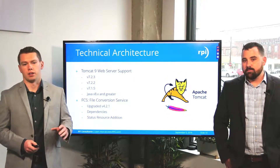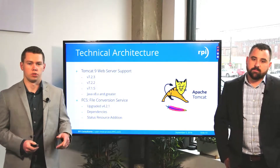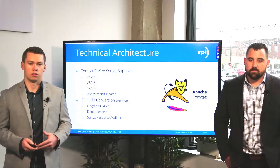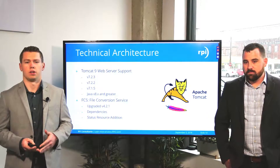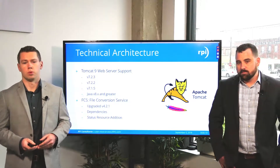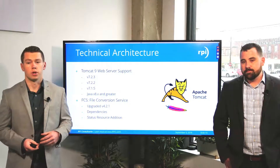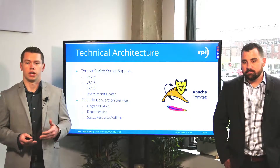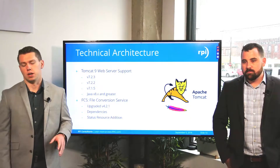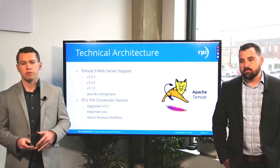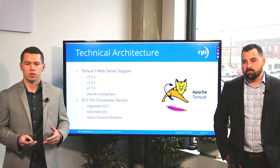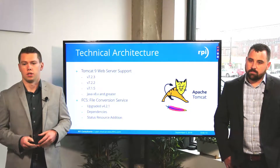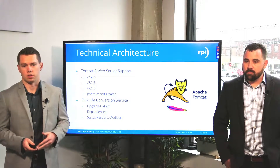We're also looking at Tomcat 9 web server support for versions 7.2.3, 7.2.2, and 1.5, utilizing Java 8 or greater. The file conversion service has been upgraded to version 4.2.1, which will be a prerequisite for Perceptive Experience Content Apps 2.4. We're also utilizing a new call enhancement using a stateless API image rendering process. Previously there was a two-call method to render images, which caused some slowness. We're removing the integration server dependency for rendering images to speed up the process.